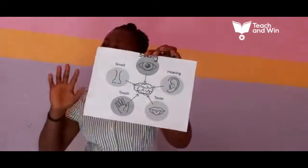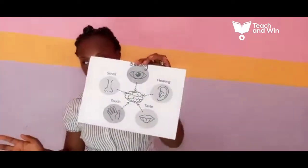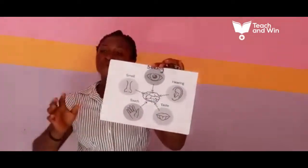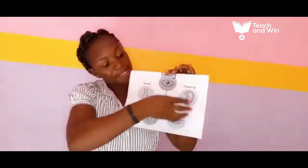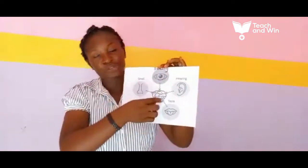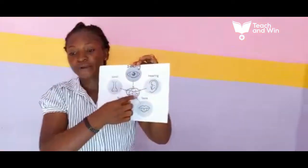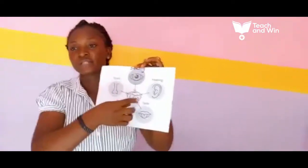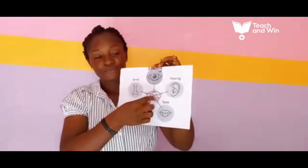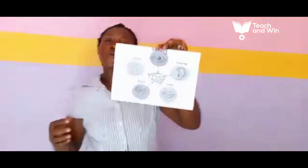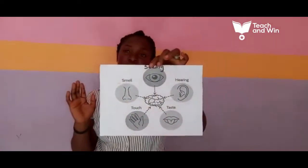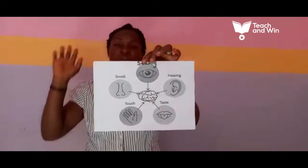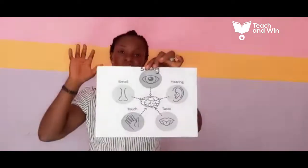Do you know why they are called sense organs? They are called sense organs because they pass information to the brain — they are connected to the brain. So look at my picture. How many sense organs do we have? Five sense organs.